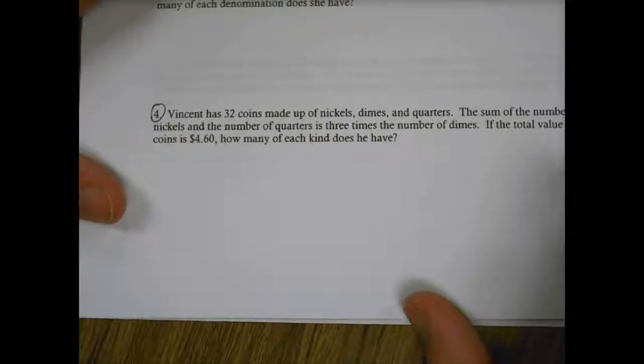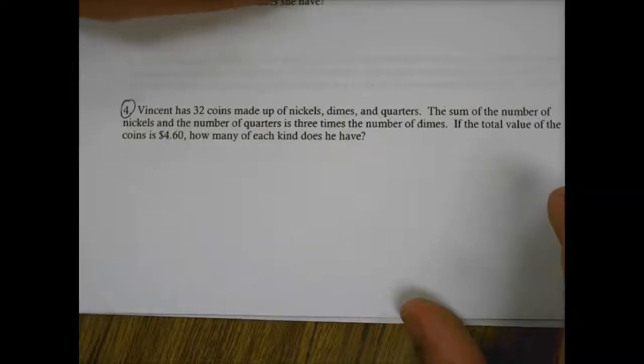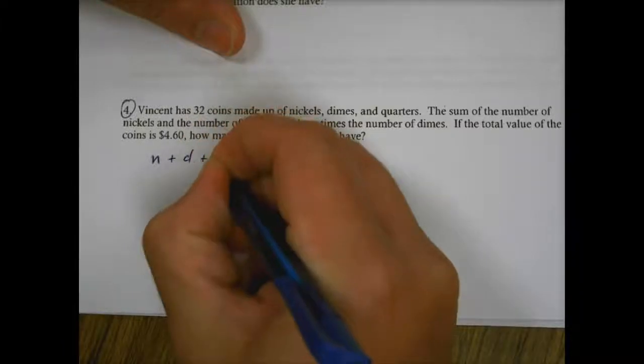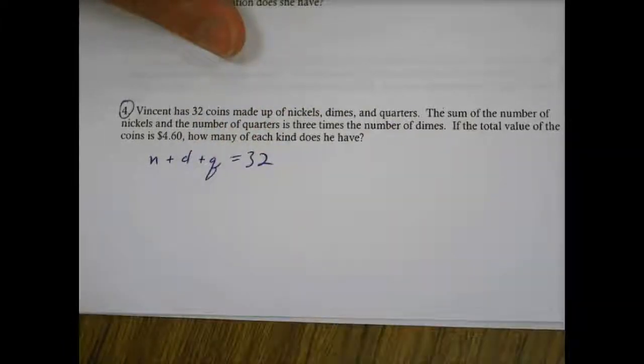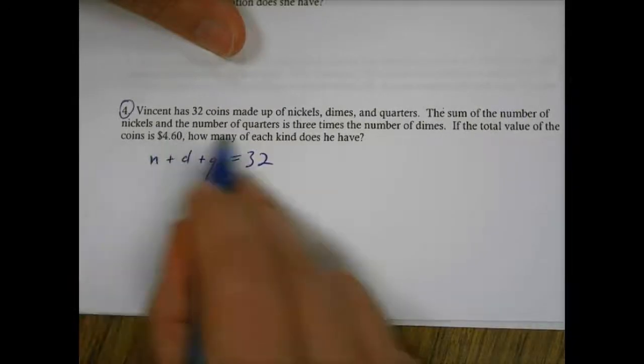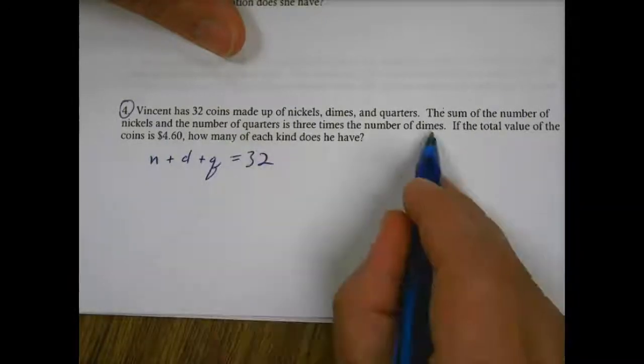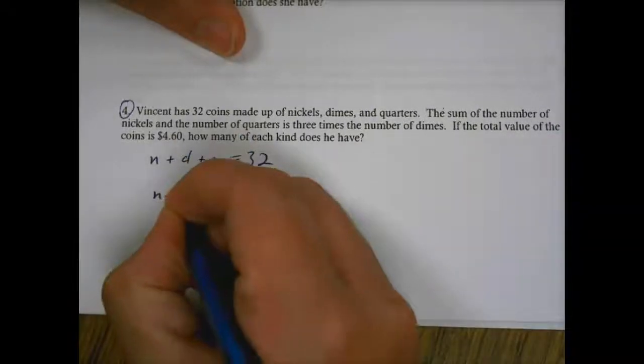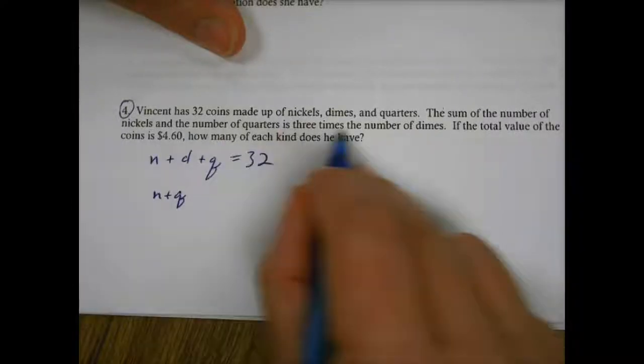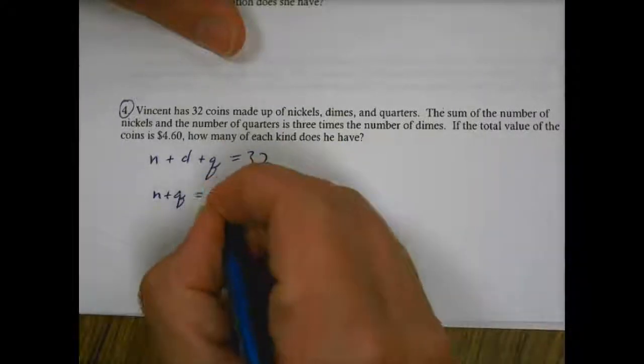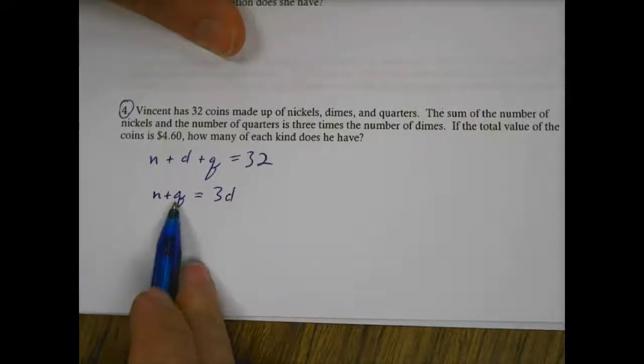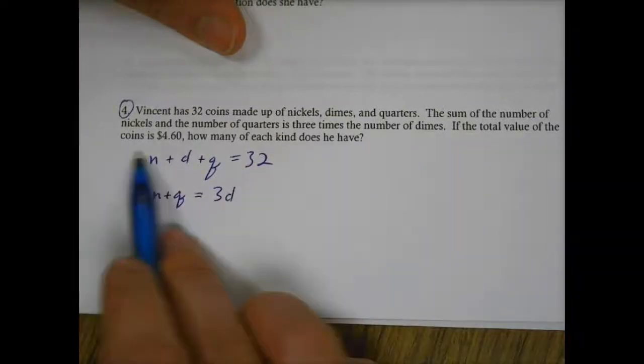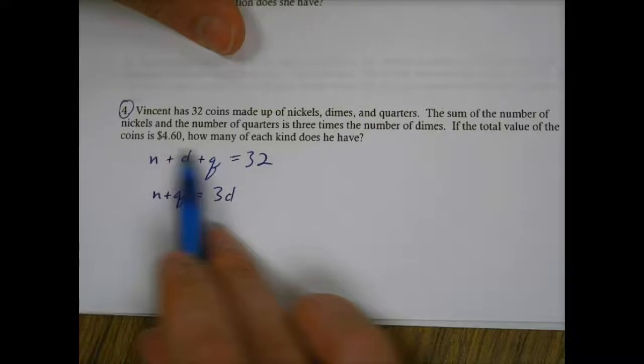Alright, looking at number four. It says, Vincent has 32 coins made up of nickels, dimes, and quarters. So I know that the amount of nickels plus the amount of dimes plus the amount of quarters is equal to 32. The sum of the number of nickels and the number of quarters is three times the number of dimes. So nickels plus quarters is three times the number of dimes. If the total value of the coins is $4.60, how many of each kind does he have?